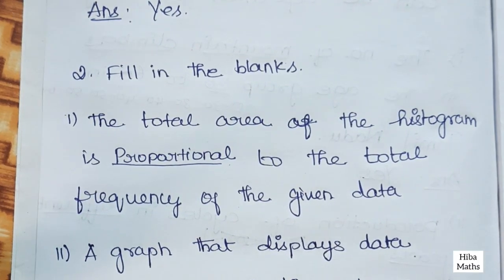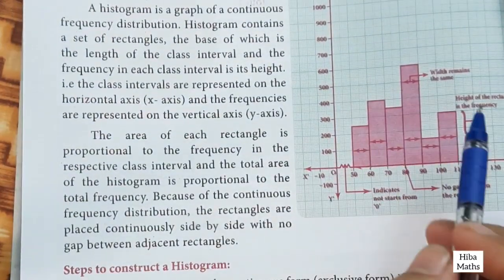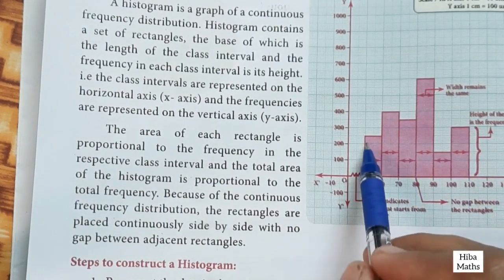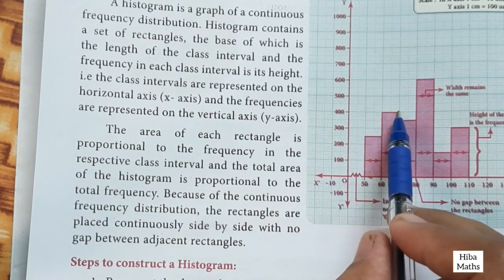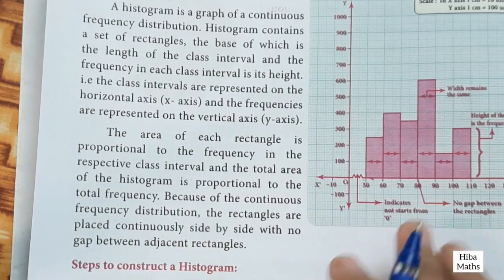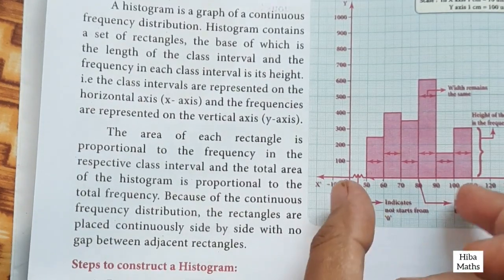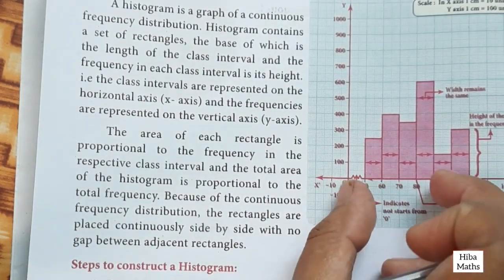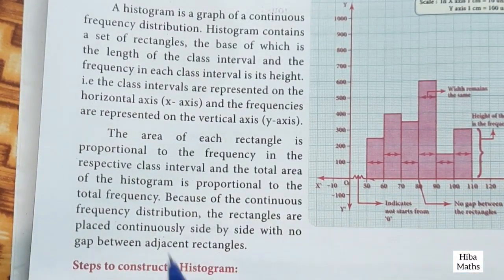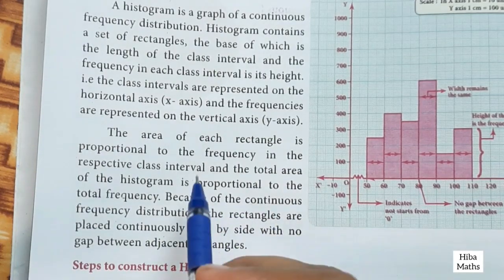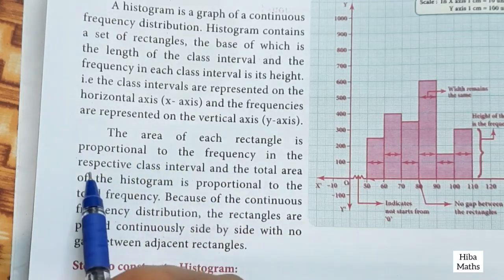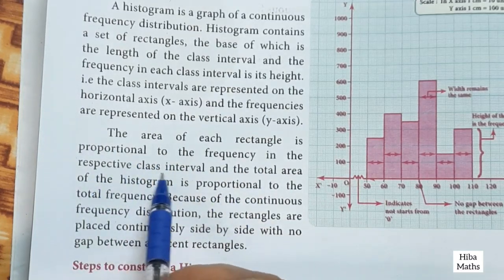The total area of the histogram — looking at the histogram, this area is 250, this is 400, so 250 plus 400 is 650. That is, the total area of the histogram is dash to the frequency. The area of each rectangle is proportional to the frequency in the respective class interval.